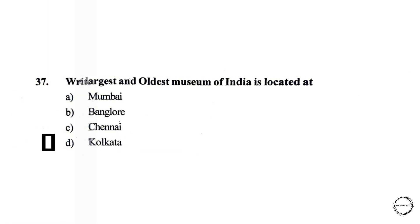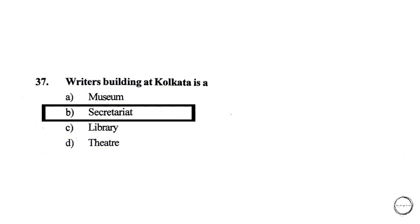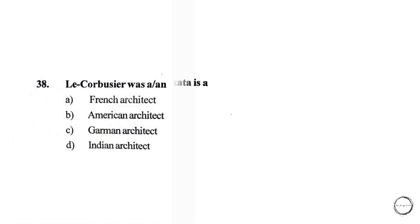Moving on, Writers' Building at Kolkata is a: A) museum, B) secretariat, C) library, D) theater. The right answer is option B, secretariat.